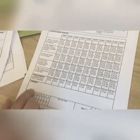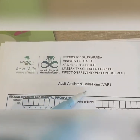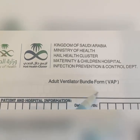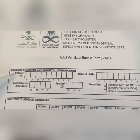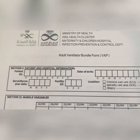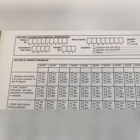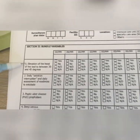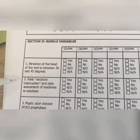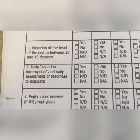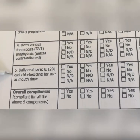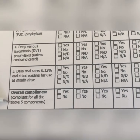The next one is the adult ventilator bundle form — very important. Write the patient ID and surveillance plan date. Then follow the five bundle variables: elevation of the head of the bed between 30 and 45 degrees, daily sedation, PUD prophylaxis, DVT prophylaxis, and daily oral care, plus overall compliance.